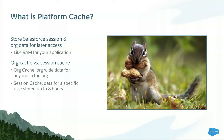There are two different kinds of caches: org cache and session cache. Org cache works for org-wide data for anyone in the org. Session cache is data for a specific user, stored up to eight hours, or until the user logs out or the session expires. You might be wondering why there's a squirrel on the slide — the analogy is that if a squirrel wants to eat, he needs to go up a tree to get its nuts. But the cheeks are like the cache, because it's a lot faster to eat from your cheeks rather than going up and down from the tree all the time.